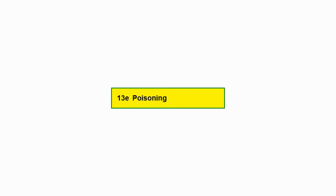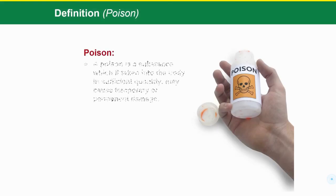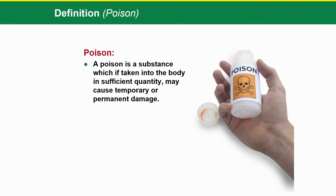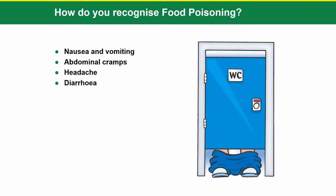30D is all about poisoning. The definition of a poison is a substance which is taken into the body in sufficient quantity and it may cause temporary or permanent damage. How do you recognize food poisoning? Nausea and vomiting, abdominal cramps, headache, diarrhea, sweating and shock.